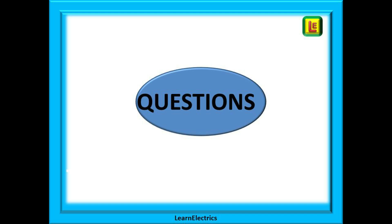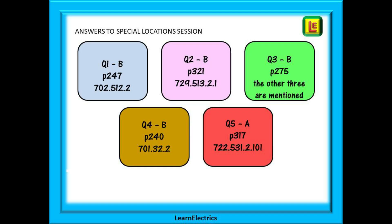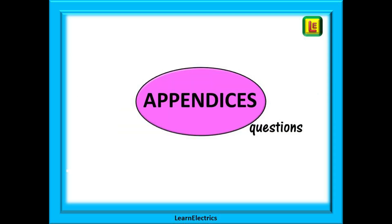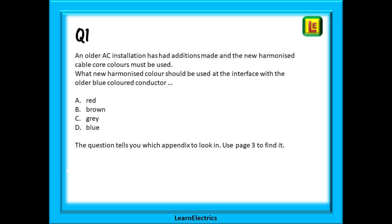Now we can look at some questions. But first, as always, the answers to session 12's questions on special locations. Pause the video while you check your answers for questions 1 to 5. And the answers for questions 6 to 10 are also shown. Now to this video's questions on the appendices — there are 8 questions. Question 1 talks about harmonised cable core colours; find the correct appendix from page 3 and you'll find the correct answer.